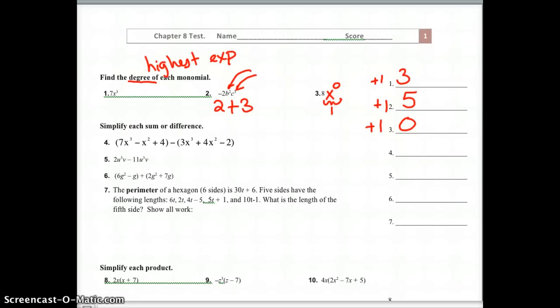For the next couple, we are simplifying each sum or difference. Remember, you can only combine like terms. So we can either add the opposite for subtraction, or if you like to picture distributing the negative in, that's good too. So what we have here is 7x cubed minus x squared plus 4. We'd have a negative 3x cubed, a minus 4x squared, and a plus 2.